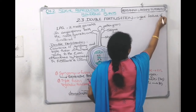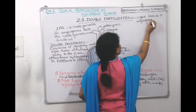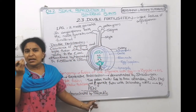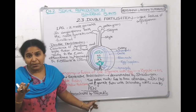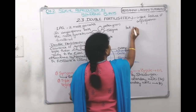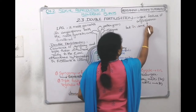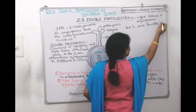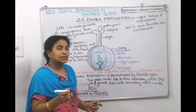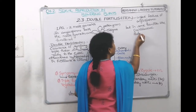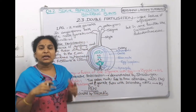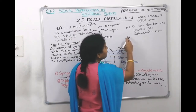Double fertilization is a unique characteristic feature of angiosperms. However, in some families like Orchidaceae and Podostemaceae — which are angiosperms — double fertilization is absent.